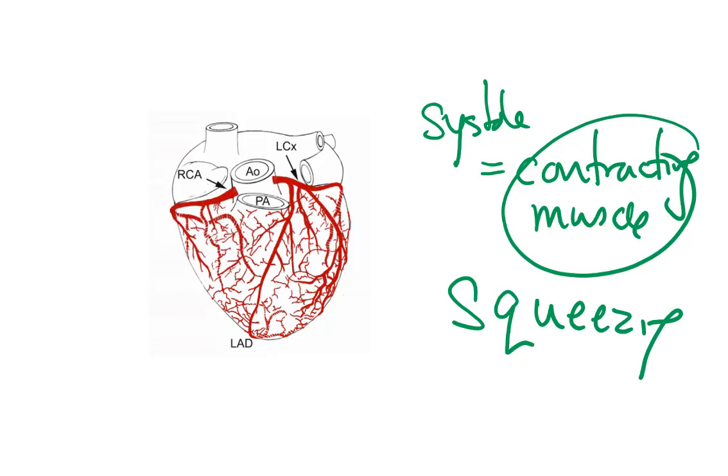But a secondary issue is these semilunar valves are up and over and they're essentially blocking the flow out to the coronary arteries as well. So during systole, we are going to have reduced flow.